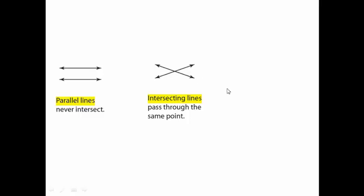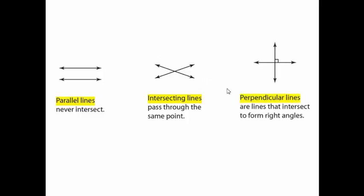The third and last type is called perpendicular lines. They are intersecting lines, intersecting at a certain point like this. But the angles between them are all right angles — 90 degrees. So right now we have learned three types: the first is parallel lines, the second is intersecting lines, and the last is called perpendicular lines.